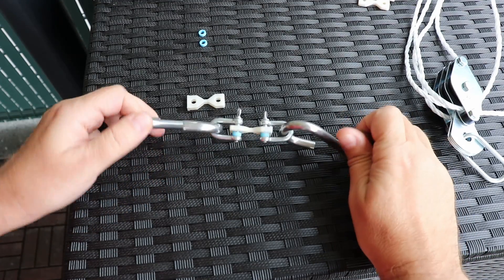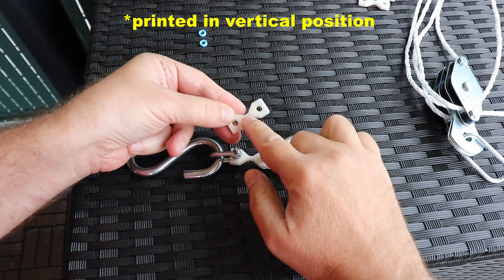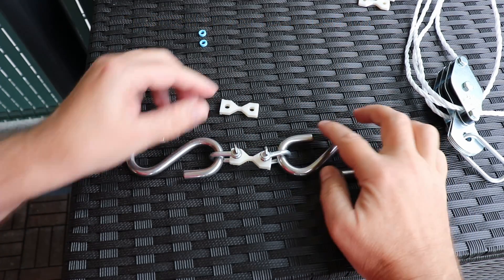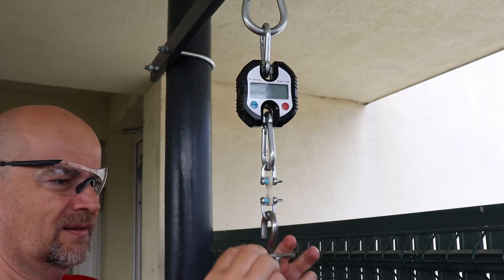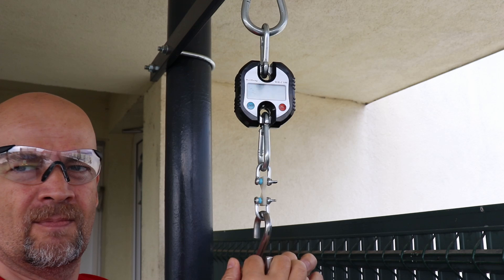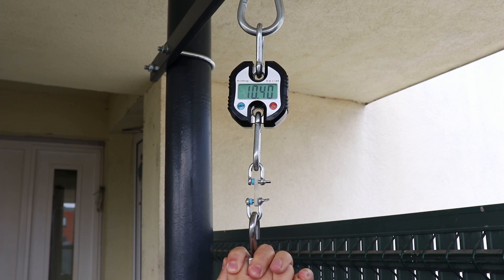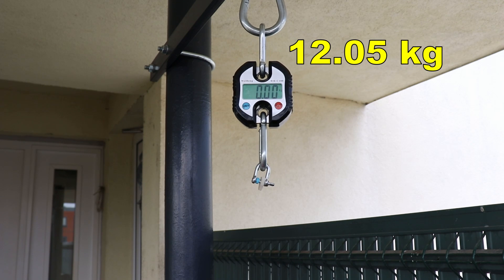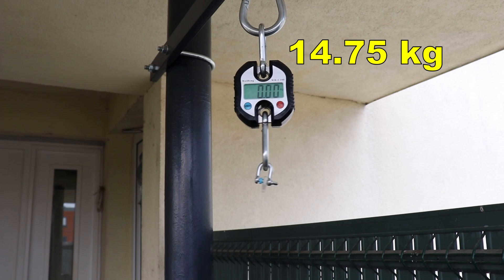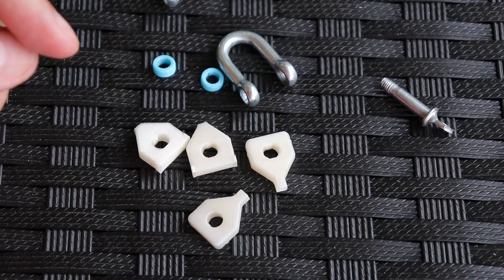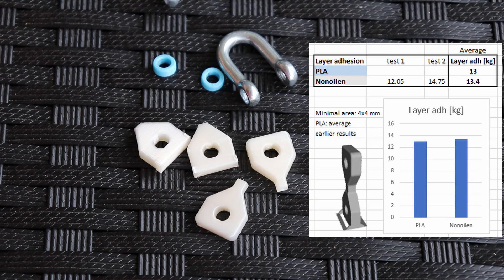I will start with mechanical tests and the first one will be the layer adhesion. The smallest cross-section area of this test specimen is 4 by 4 millimeters and I will pull it until it breaks. Well, they all broke on the smaller cross-section area and here you can see the results compared with regular PLA.